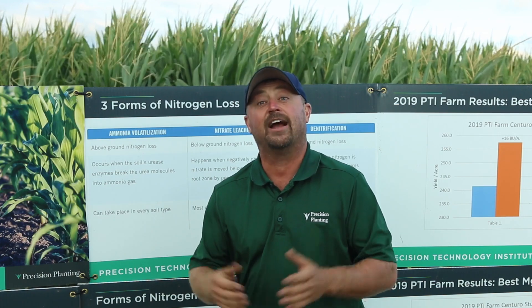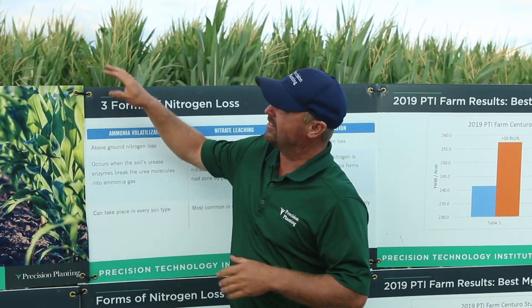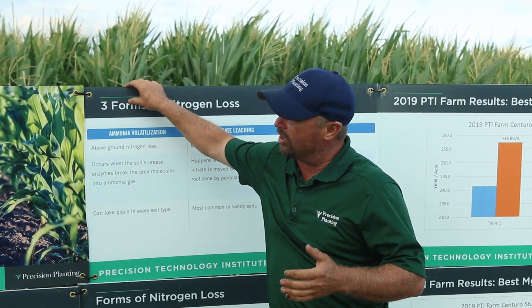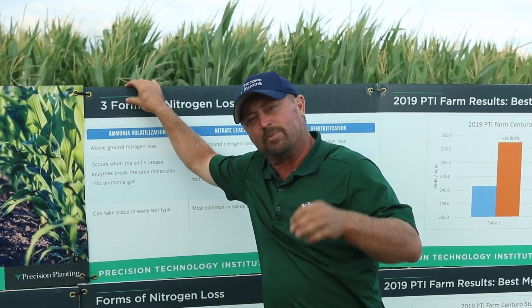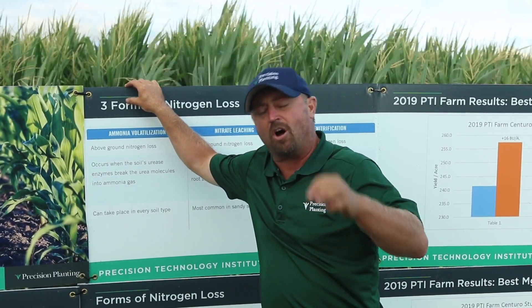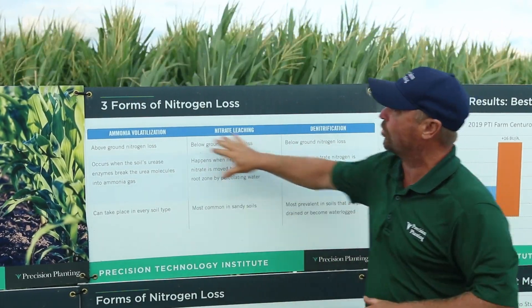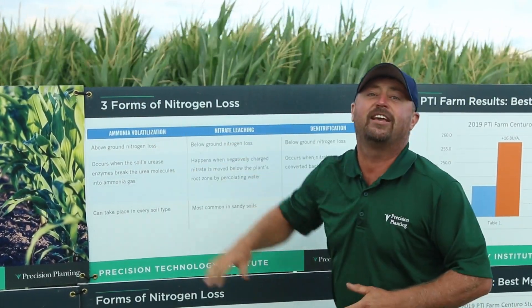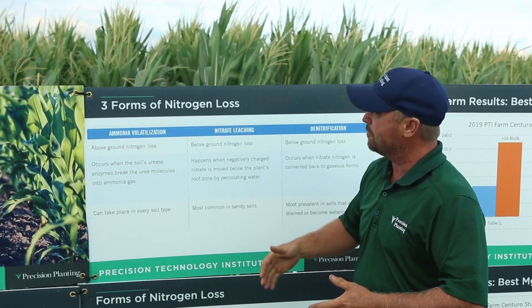Today we're concentrating on nitrogen losses on the farm. This is a neat little study that we generated to look at different forms of nitrogen loss. At this farm, one of the things that we look at is three different ways we can lose nitrogen each and every growing season.